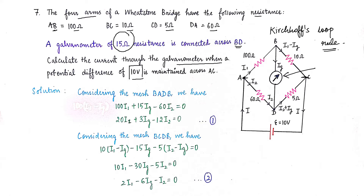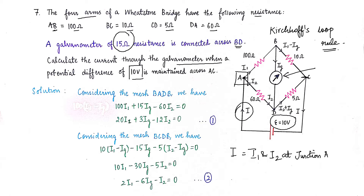There is some current I flowing through this circuit due to the potential of 10 volts. When this current reaches junction A, it is divided into I1 and I2. This division is based on Kirchhoff's junction rule.